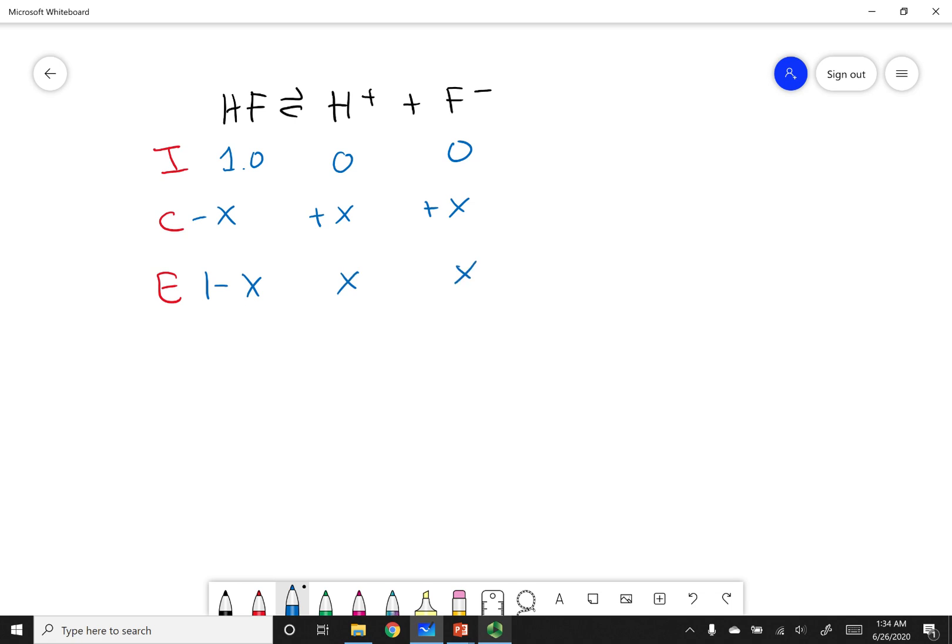Our Ka from the information sheet is 7.2 times 10 to the negative 4th. This equals my products, x times x over my reactants, 1 minus x. We notice we have a small Ka, which means I can use my approximation: x squared over 1. Remember, I'm saying x is insignificant when I add or subtract it.